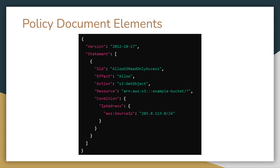A policy document can also include a principal, which is required in resource-based policies. If you create a resource-based policy for an S3 bucket, you must indicate the account, user, role, or federated user to whom you would like to allow or deny access. In our case, this specific policy will most likely be attached to a user or role, so the principal is implied as that user or role.